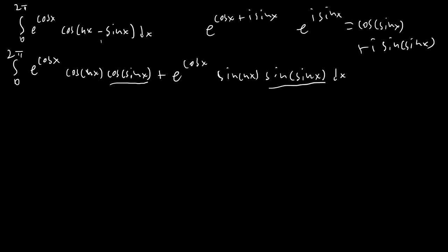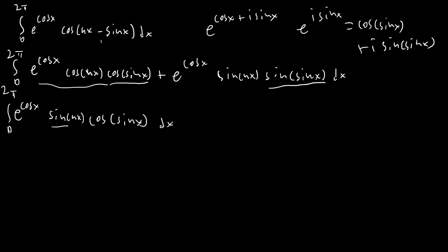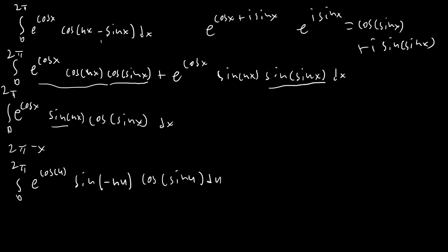Instead of the first integral, let's consider the integral from 0 to 2π of e^(cos x) · sin(nx) · cos(sin x) dx — the same as before except with sin(nx). The trick is that since we have sin(nx), this integral goes to 0. We can see this by symmetry: setting u = 2π − x, we get the integral of e^(cos u) · sin(−nu) · cos(sin u) du, which is just negative the original, so it must equal zero.